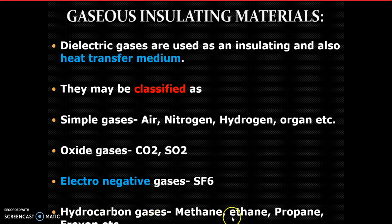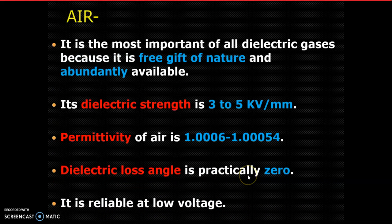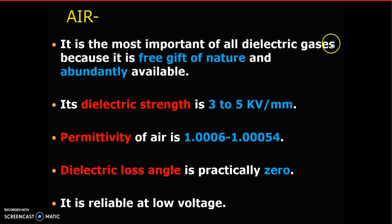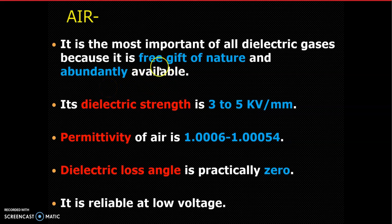Other gases such as hydrogen, methane, ethane, propane, and propene are also used. Now let us look at air as a gaseous insulating material. Air is the most important of all dielectric gases because it is a free gift of nature - no money is required. It is readily available, abundantly available, and available everywhere. Therefore, air is used as a popular insulating material.